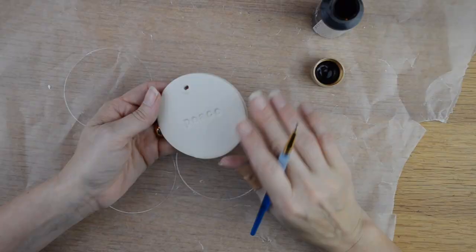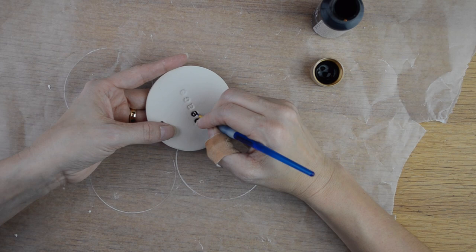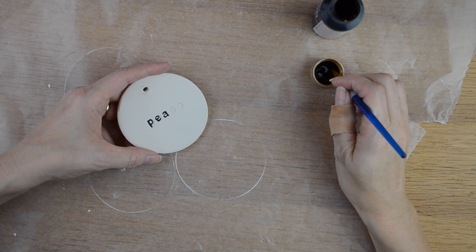Now that my ornament has baked and cooled off I am taking my black acrylic paint and painting in my lettering with a fine tipped paint brush. You can use a fine tipped sharpie marker if you would like.